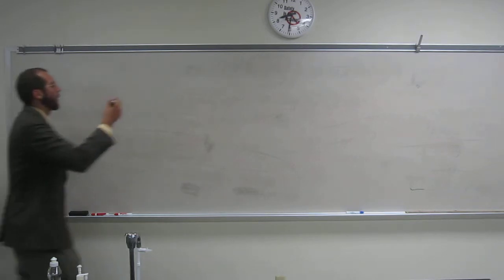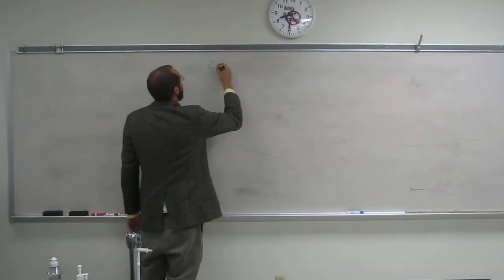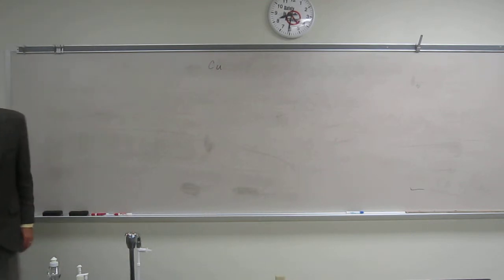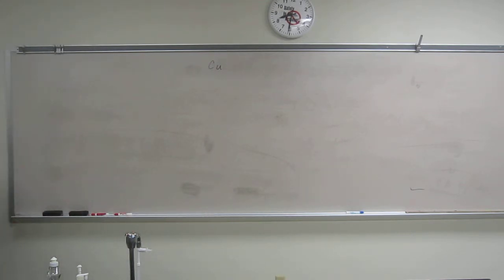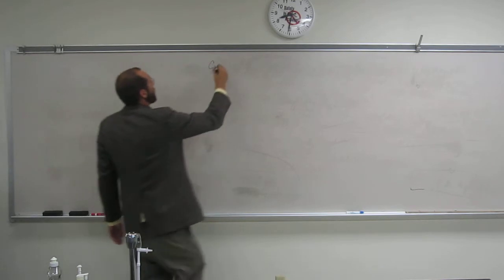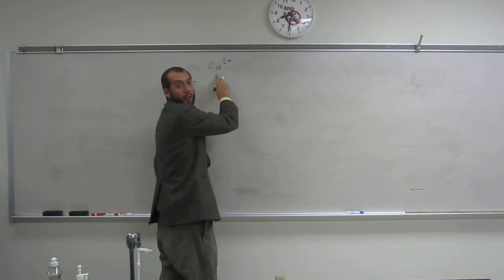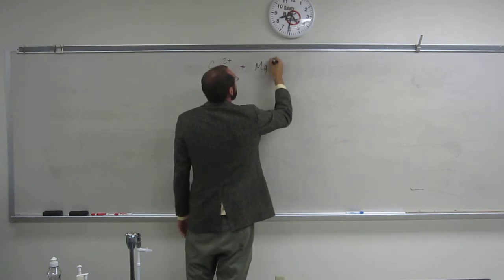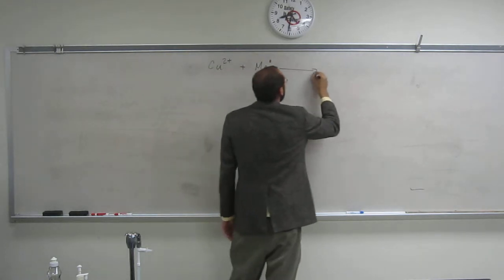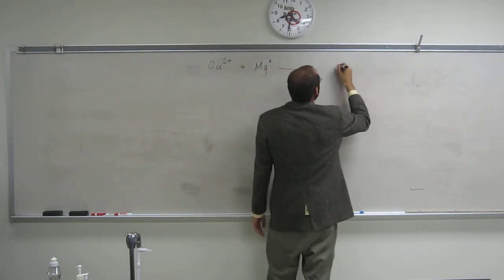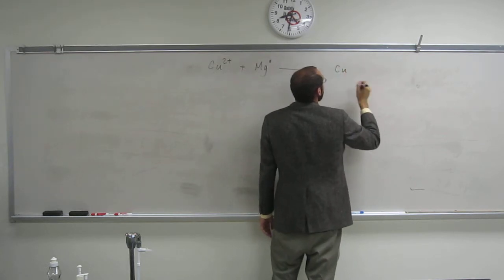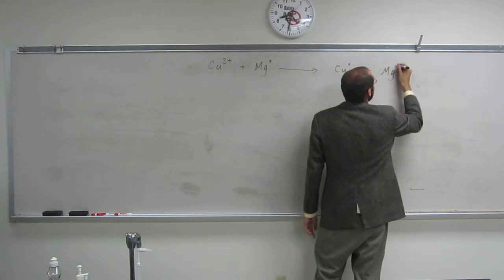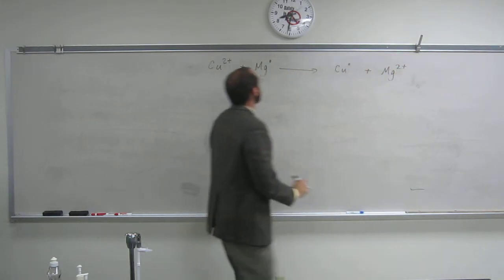So recall what we're doing. We're isolating copper from copper 2 plus ions in solution and we're reacting them with magnesium metal, right? And then that's going to go to solid copper coming out of solution plus magnesium 2 plus ion.